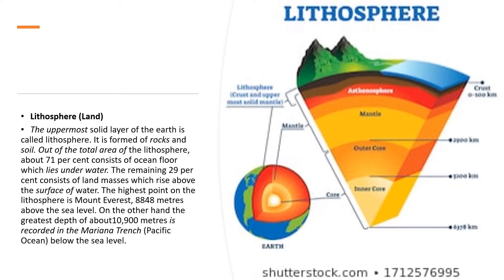That is 71% of the total lithosphere is ocean floor. The remaining 29% consists of land masses which rise above the surface of water. In the previous chapter also, we had learnt 71% is water and 29% is the land. So 29% of the land mass we can see rising above the surface of the water.